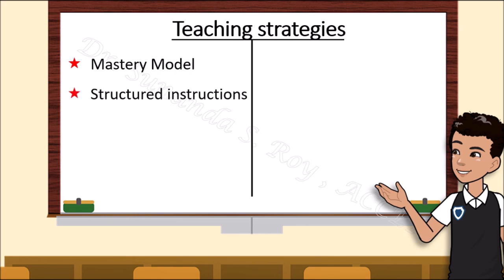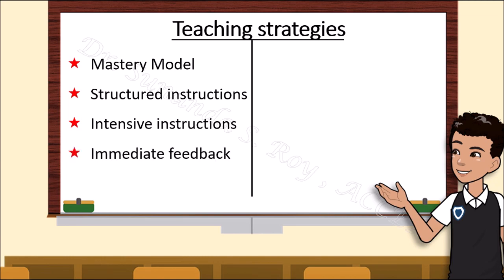Teachers need to give very clear and structured instructions which deal with phonetics and the structure of words. Instructions should be intensive — meaning short and clear — and need to be repeated so that students can grasp them easily. Teachers should also give immediate feedback to students with dyslexia. If they make a mistake in reading, however minor it may be, it needs to be corrected immediately.